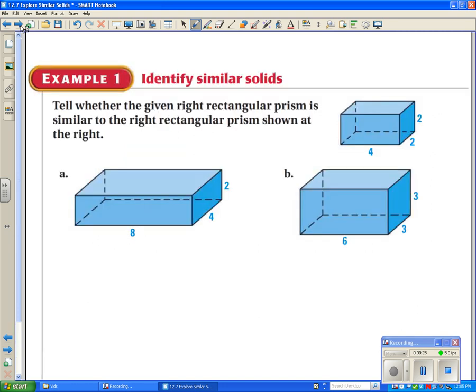You're supposed to be able to tell if two figures are similar. Tell whether the given right rectangular prism is similar to the right rectangular prism shown at the right, one of these two. So we have long, medium, and short, and we need to compare those to the long, medium, and short.